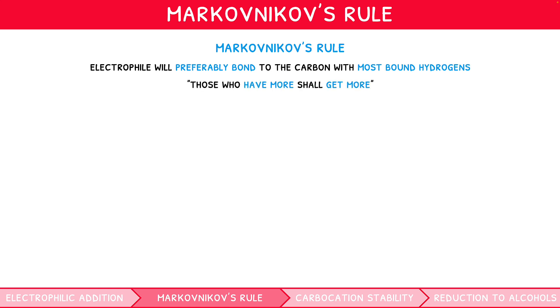Let's reconsider our example of but-1-ene. The first stage of the mechanism remains unchanged, however, when drawing the second stage we use Markovnikov's rule. As the first carbon has two hydrogens bound, but the second only has one, the hydrogen atom will preferably bond to the first carbon. This therefore leads to the production of 2-bromobutane as the main product.